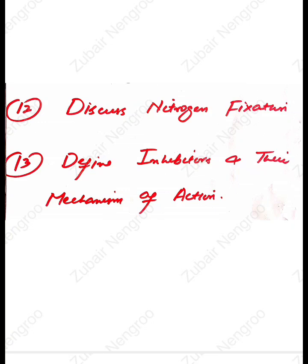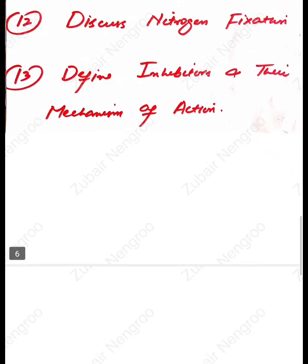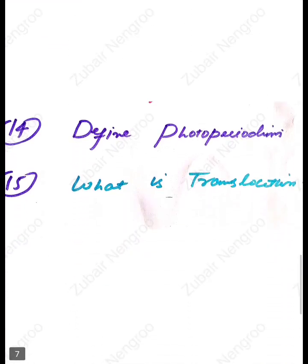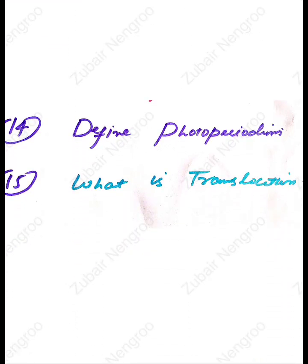The thirteenth question is: define inhibitors and their mechanism of action — enzyme inhibitors, what they are and how their mechanism works. After that, the fourteenth question is: define photoperiodism — photoperiodism involves light. The fifteenth question is: what is translocation? That is also not difficult.